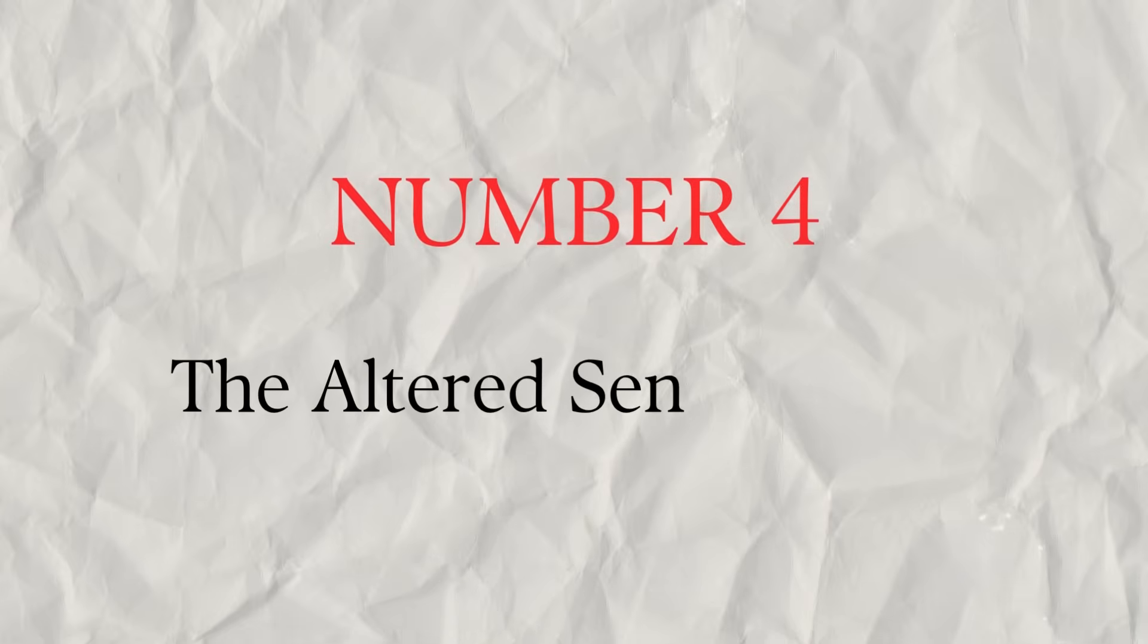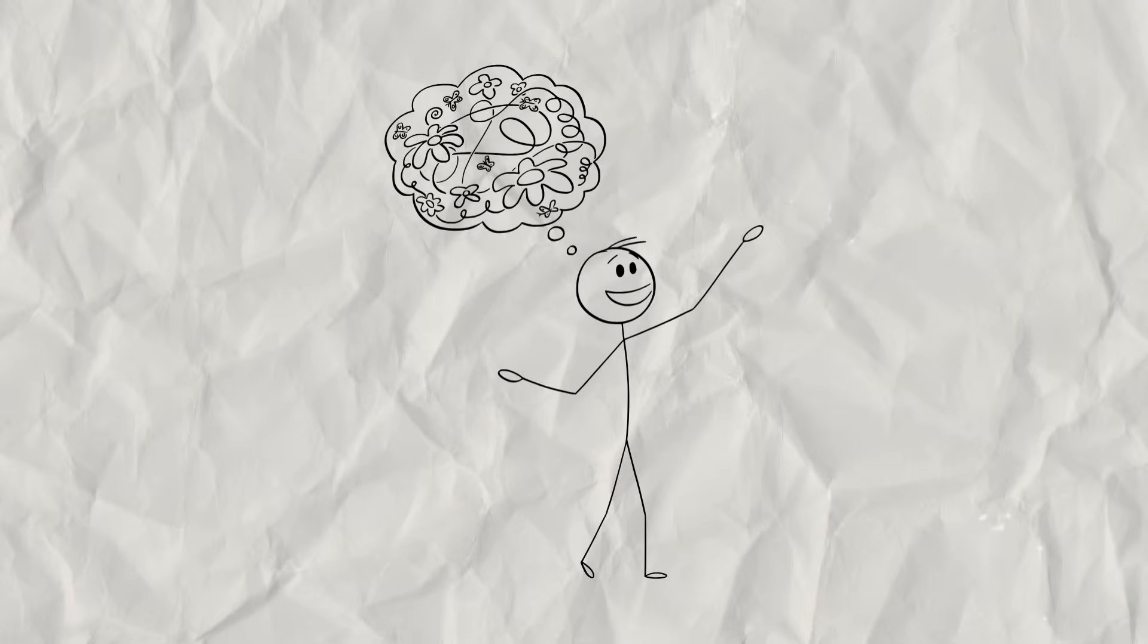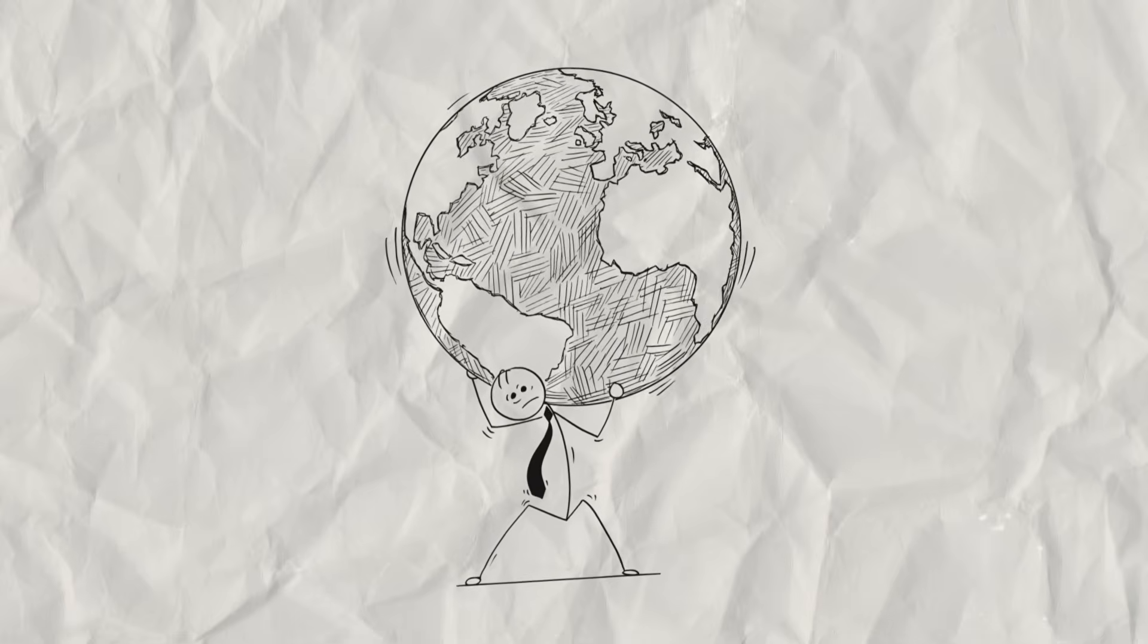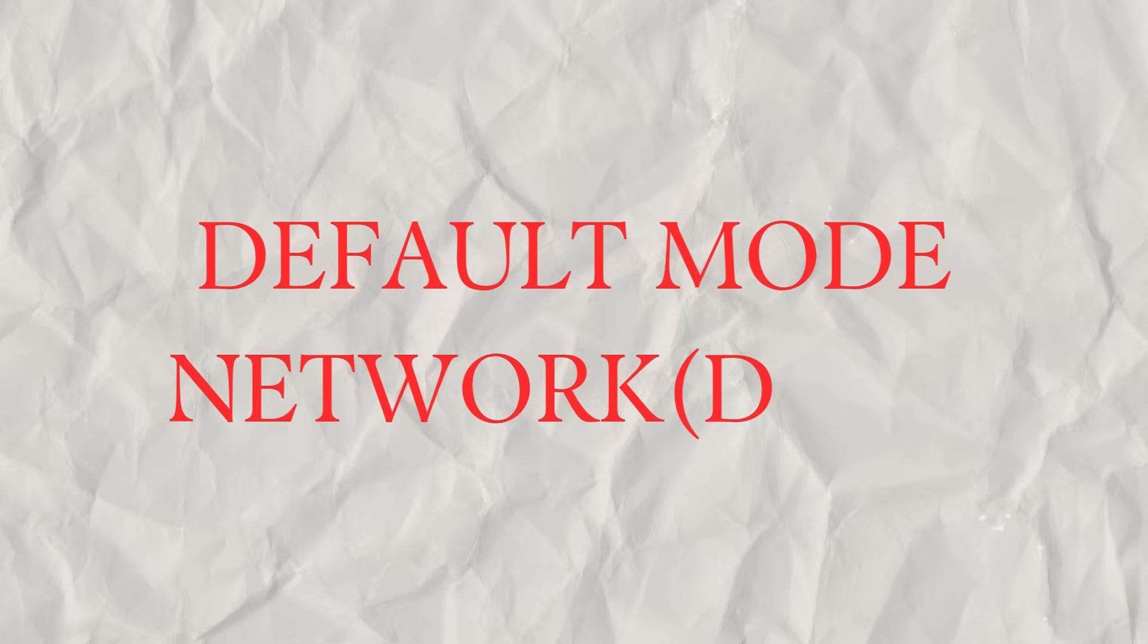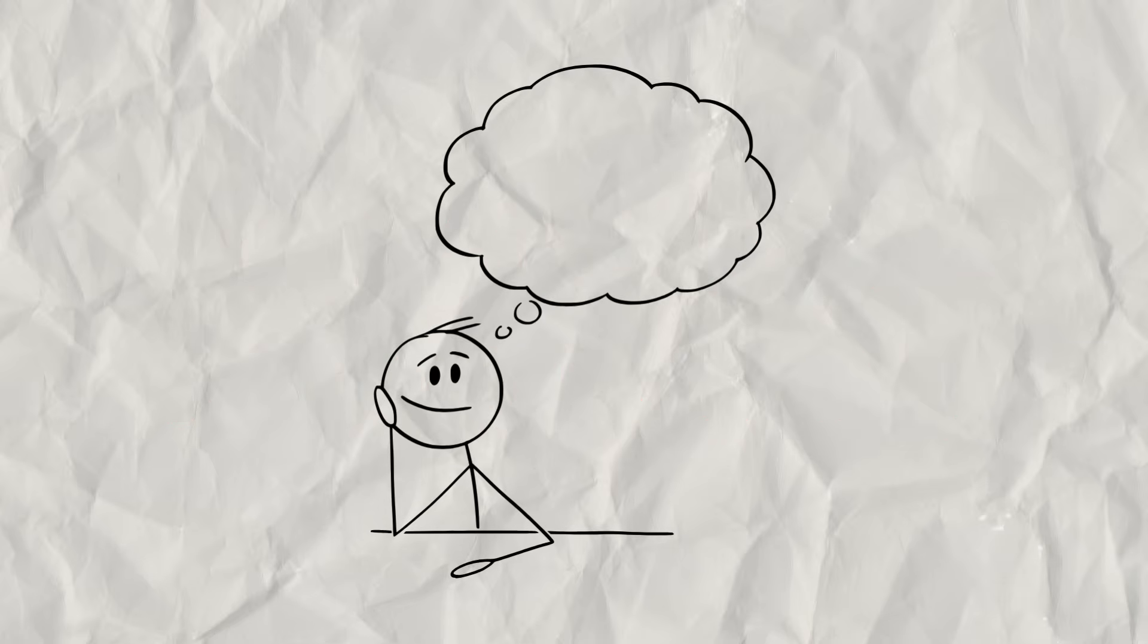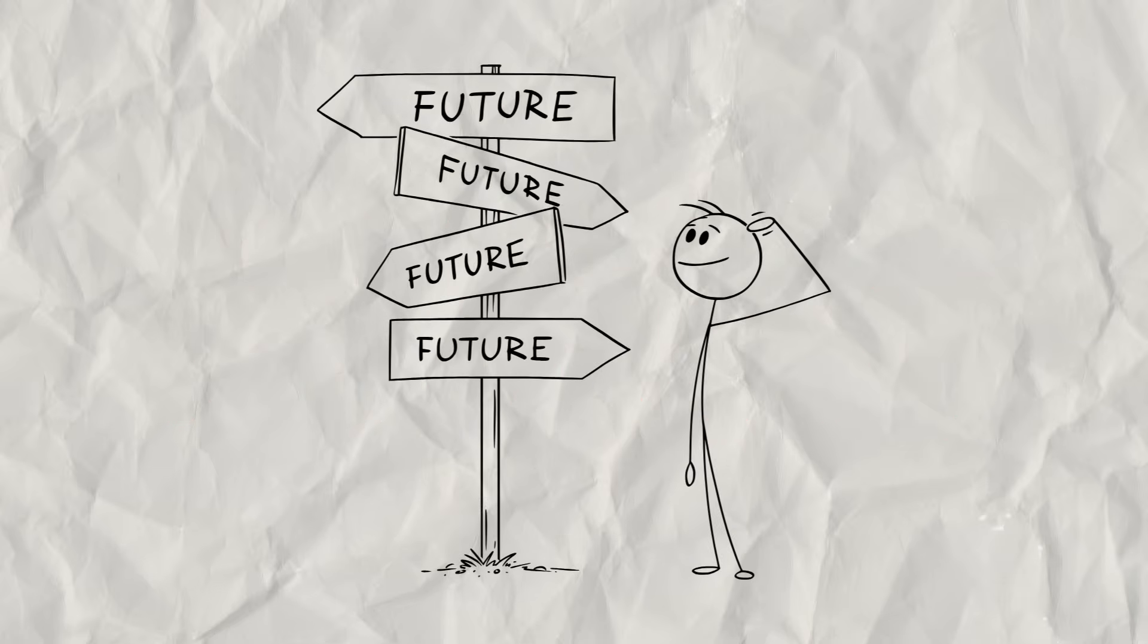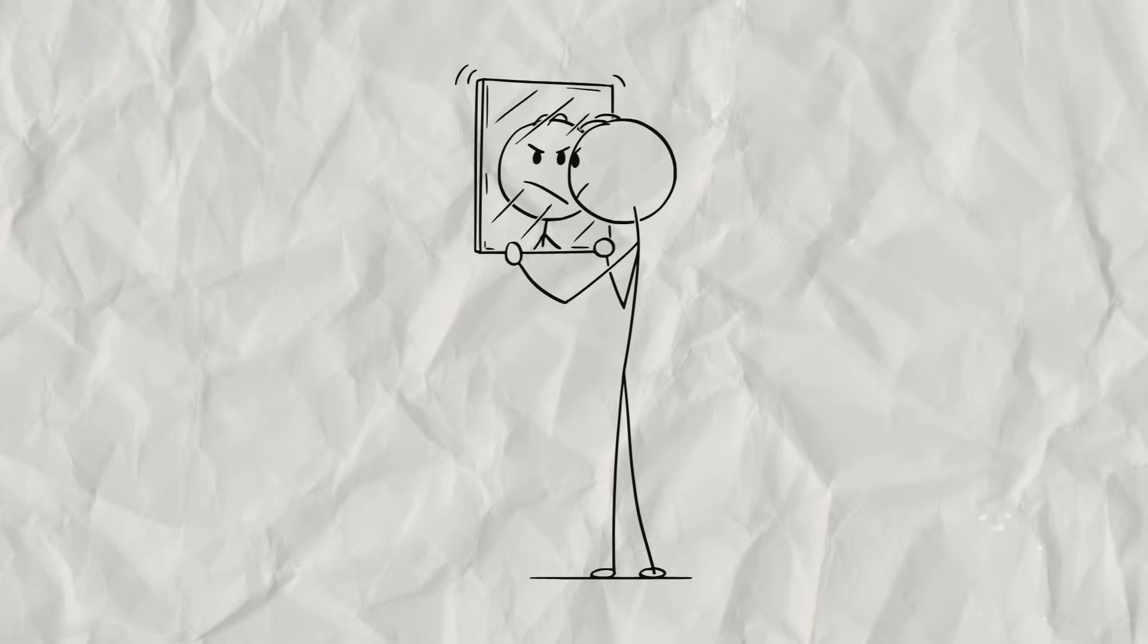Number four, the altered sense of self. We all have a default way our brain operates when we're not focused on the outside world. This is called the default mode network, or DMN. It's active when you daydream, think about your future, or reflect on who you are as a person.